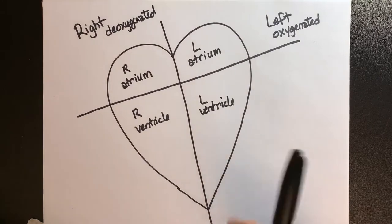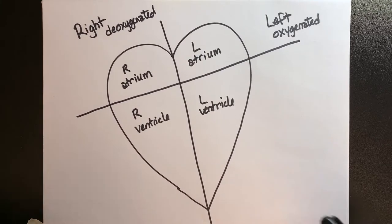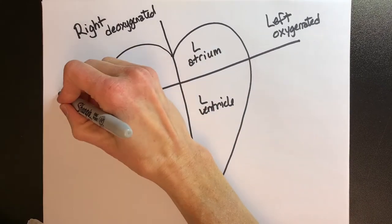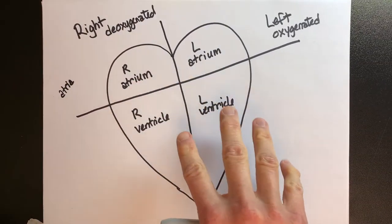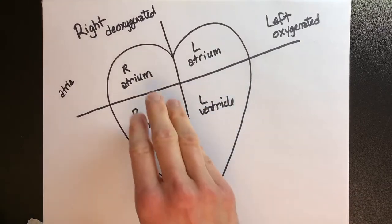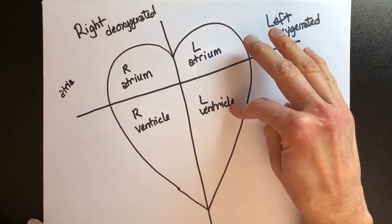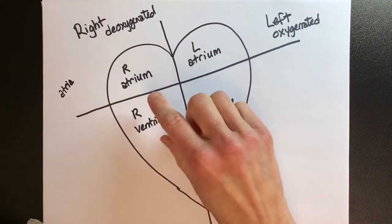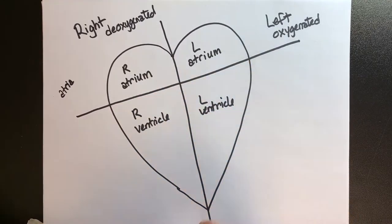I've got a heart labeled here, just your basic layout of the four chambers or rooms. The two rooms upstairs are known as atria — the plural of atrium is atria, A-T-R-I-A. Think about the heart as a duplex home with a right side and a left side, each with an upstairs and a downstairs. The upstairs rooms are called atria, so on the right side we have the right atrium and on the left side the left atrium.